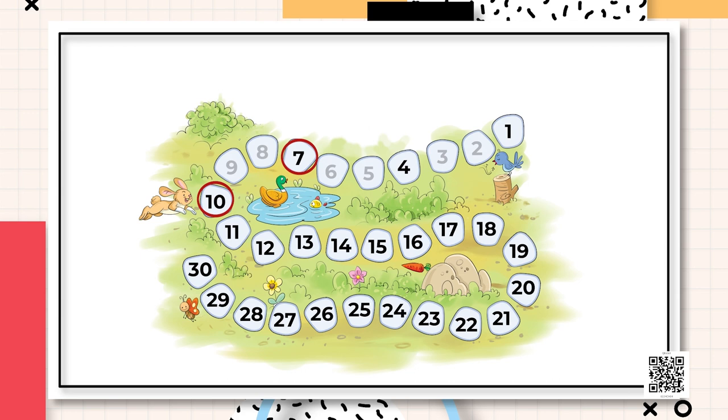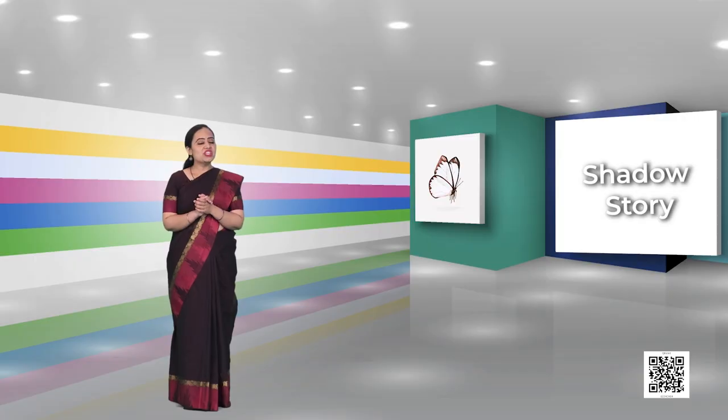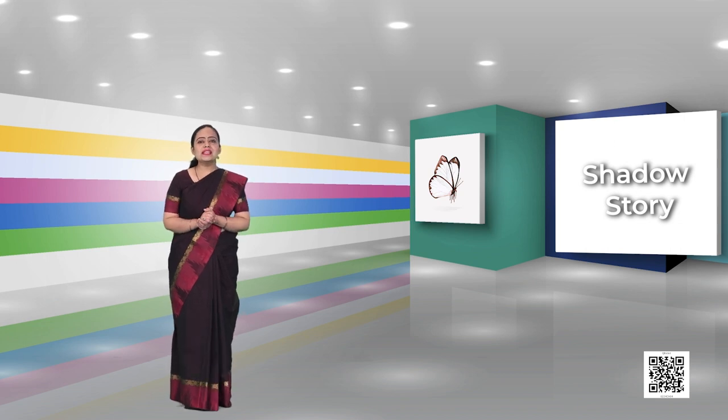He again skipped two tiles numbered eight and nine, and he landed on the tile number ten. You kids are really smart, you understood it so well, and I'm sure you can complete rest of the exercise speedily.